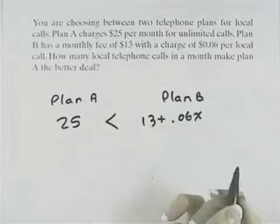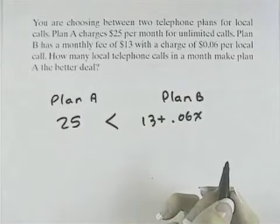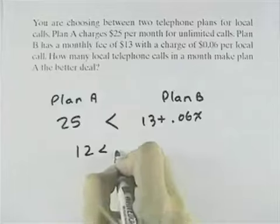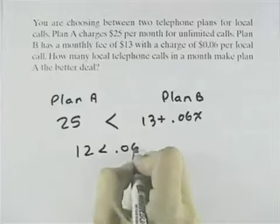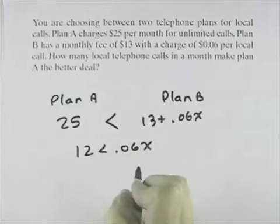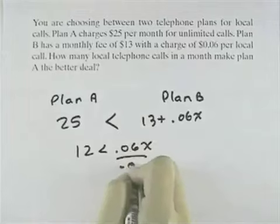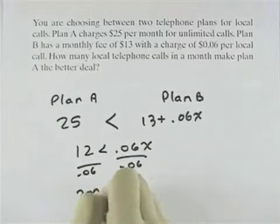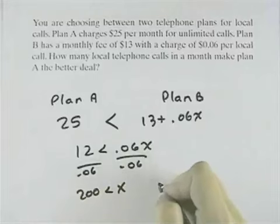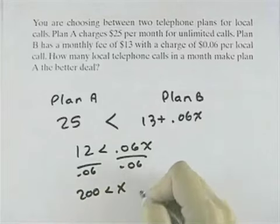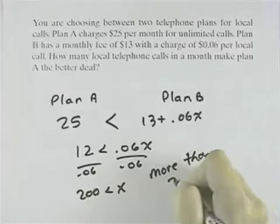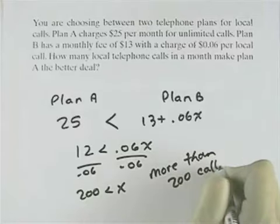For Plan A to be a better deal, that means $25 has to be less expensive. If we solve this, let's subtract 13 from both sides so that we have 12 is less than 0.06X. Dividing both sides by 0.06, we get 200 is less than X. So Plan A is the better deal whenever X is greater than 200, which means you're making more than 200 local calls.